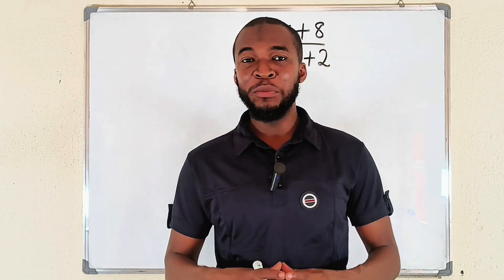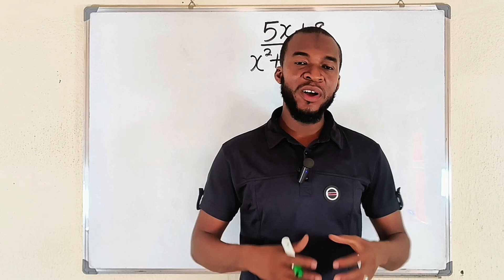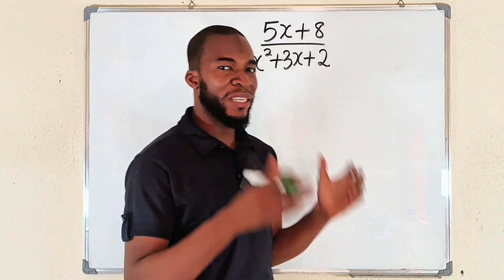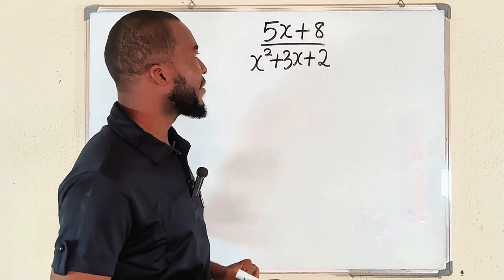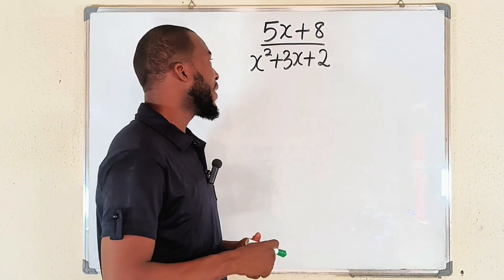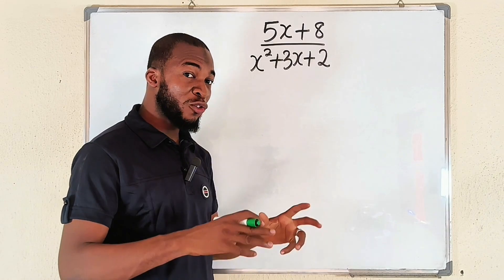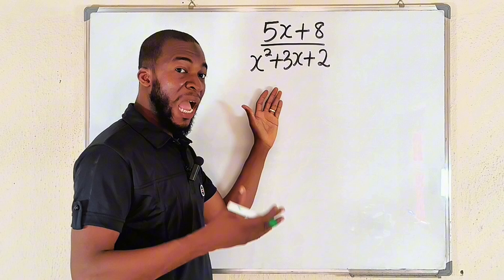Hello members of Thumball mass community. In this tutorial I'm going to show you how to apply the cover-up method in resolving compound fractions into partial fractions. We have a problem here: 5x plus 8 divided by x squared plus 3x plus 2. I'm going to show you how to apply the cover-up method in resolving this compound fraction and when to use it.